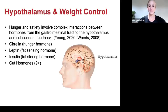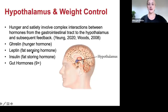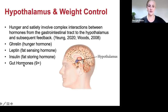Some of the primary hormones that deal with hunger and satiety are ghrelin — your hunger hormone — leptin, your fat sensing hormone (I have specific YouTube videos on both), insulin, your fat storing hormone, and then over nine gut hormones.